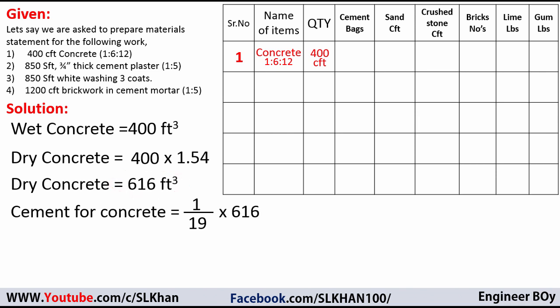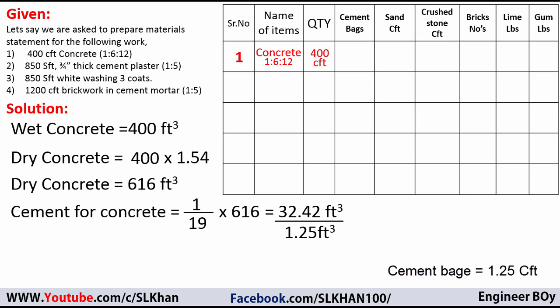We multiply this ratio by the dry concrete volume of 616, giving us cement = 32.42 cubic feet. Since cement is purchased in bags, we convert this to bags by dividing by the volume of one cement bag, which is 1.25 cubic feet in Pakistan — use your country's bag volume if different. This gives us 25.94 bags.